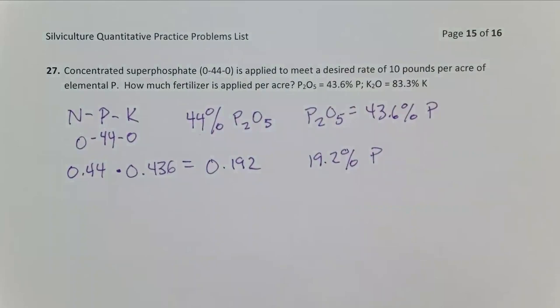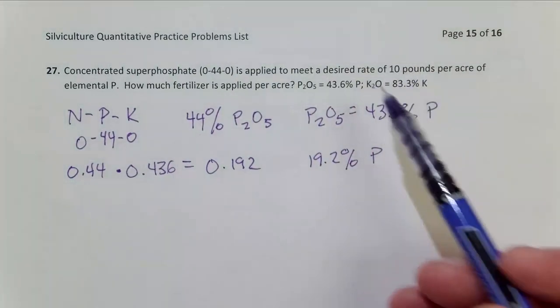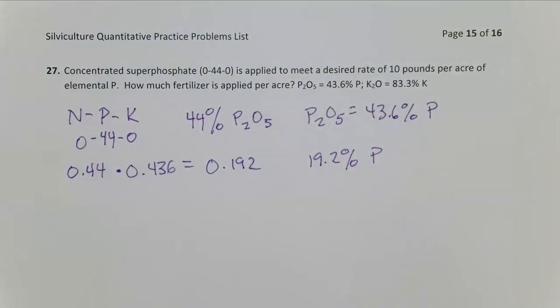Next up, we now have to go from the elemental rate to the fertilizer rate. So we know that our number needs to increase. We have to put out more fertilizer than element and we know we want 10 pounds of element. So that number 10 needs to get bigger, right?